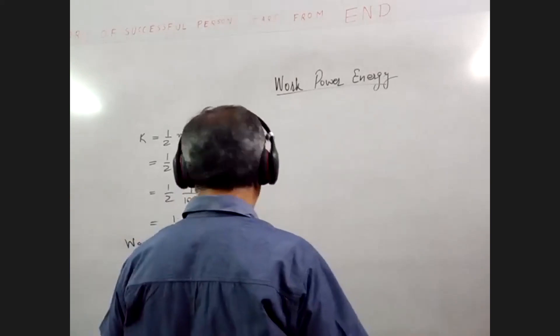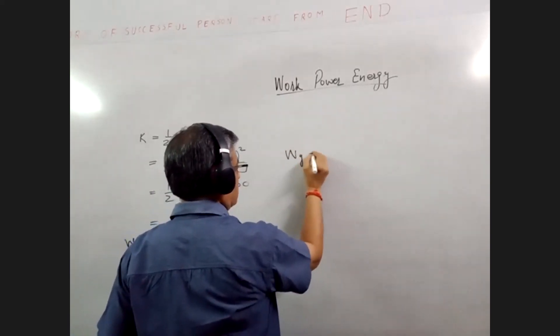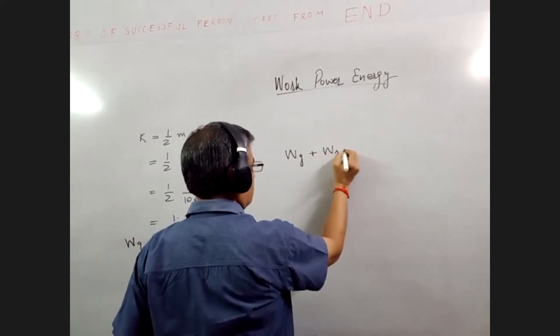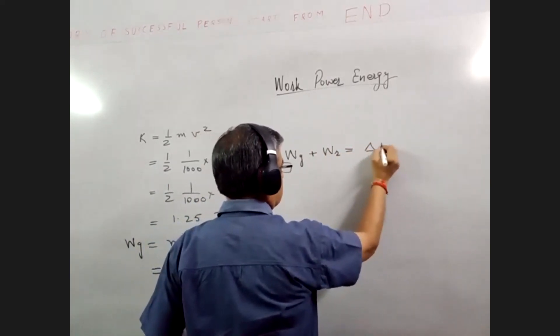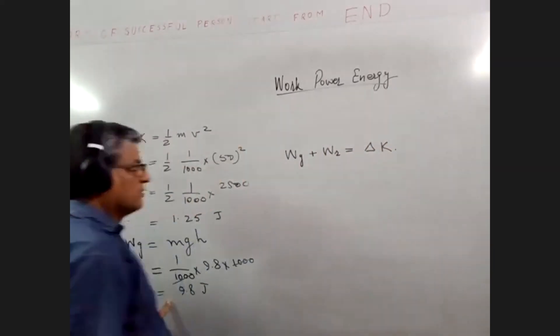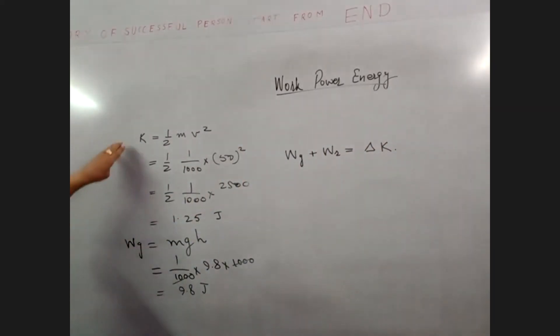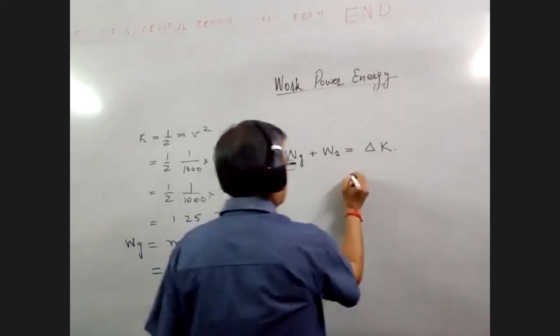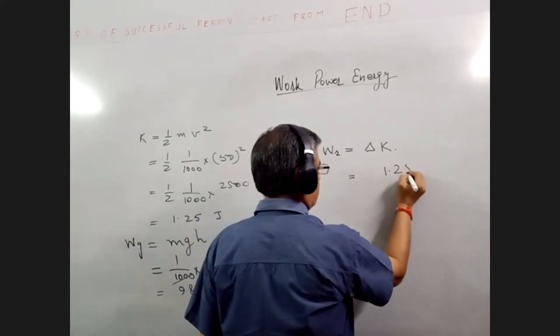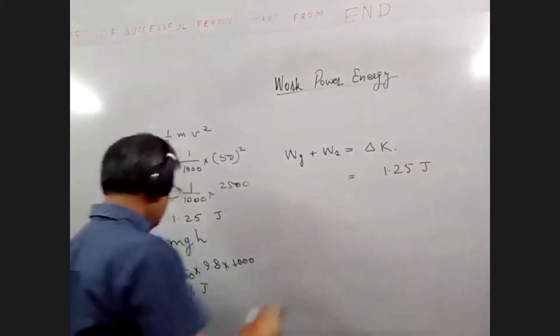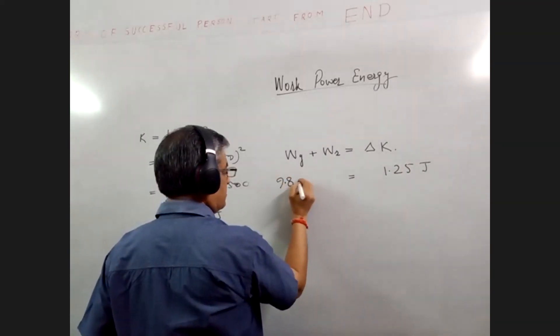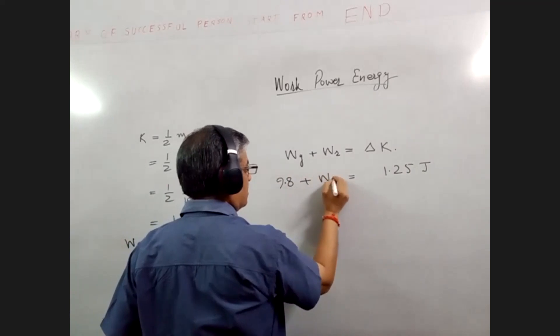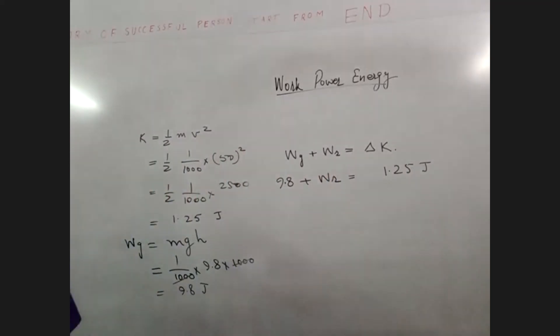So work done by gravity plus work done by resistive force should be equal to the gain in kinetic energy. Kinetic energy of the drop is 1.25 joules, and work done by gravity is 9.8 joules. 9.8 plus WR equals 1.25. So how much work is done by the resistive force?